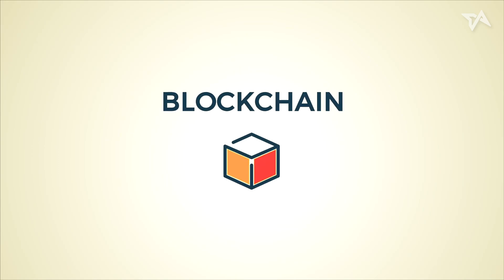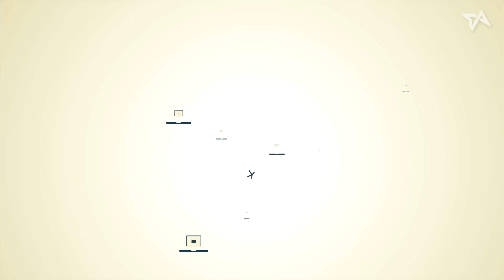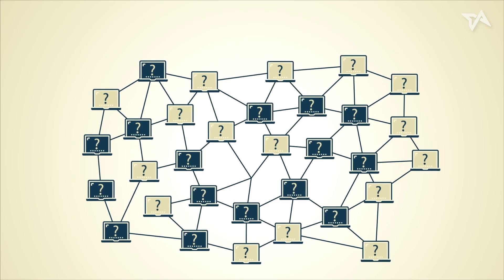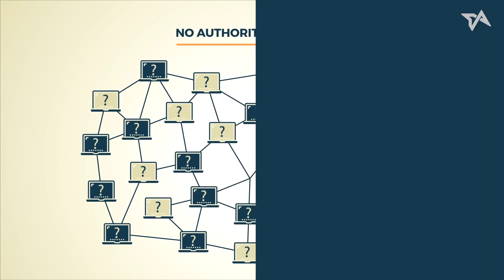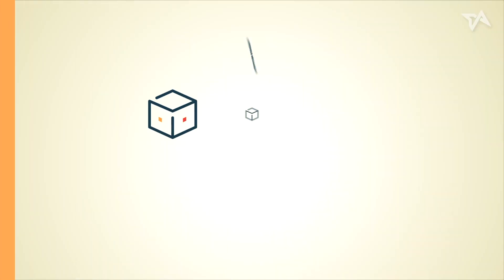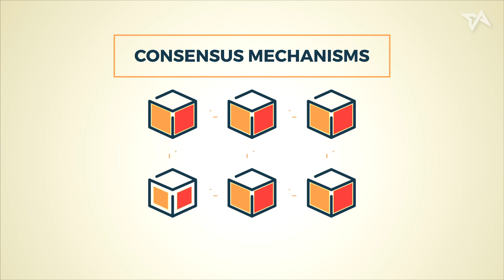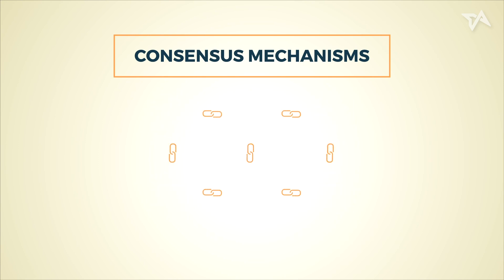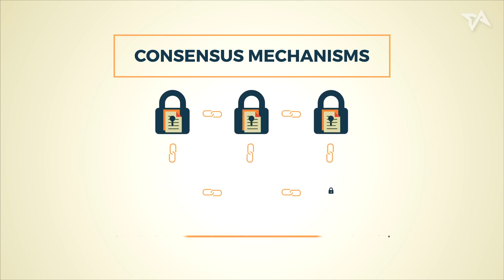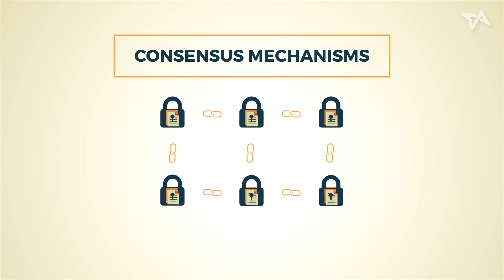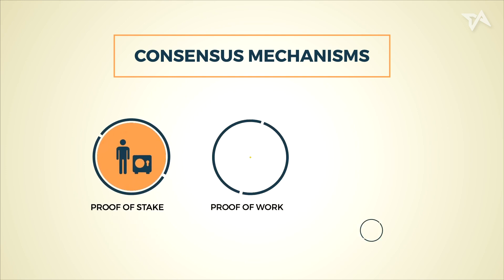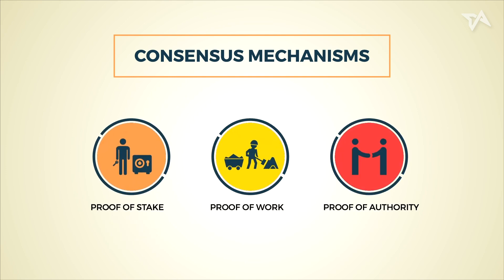Blockchain — the hype word of 2018. But do you know how a decentralized peer-to-peer system with no authoritative figure makes decisions? The answer lies in consensus mechanisms. There are various consensus mechanisms, but they all serve the same purpose: to ensure records are true and honest. The difference is the way the consensus is reached. Here, we will explore three types of consensus mechanisms.